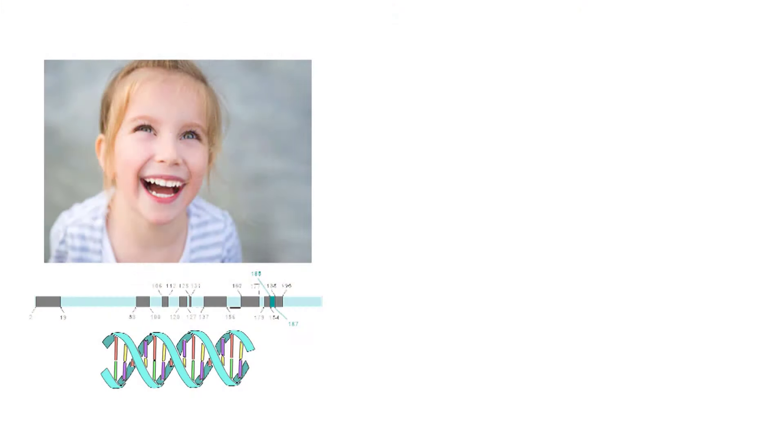Now the second problem with heritability is its core assumption. Heritability assumes that every trait we have can be divided into its genetic component and its environmental component. But think back to our first video and that water bucket metaphor. Nobody believes that genes and environment are summative anymore. We now understand that they are highly interactive and it is impossible to separate one from the other. Ergo, heritability is based on a demonstrably false assumption.